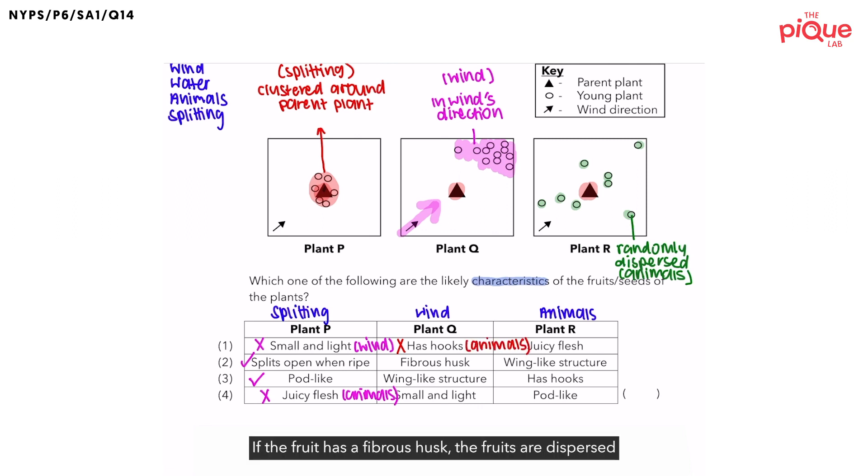Now, what about fibrous husks? If the fruit has a fibrous husk, the fruits are dispersed by water. What does the fibrous husk do? They trap air, allowing the fruit to float on water, causing the fruits to be then dispersed further away from the parent plant. So, fibrous husk is not possible, as fibrous husk would mean that the fruits are dispersed by water, not wind.